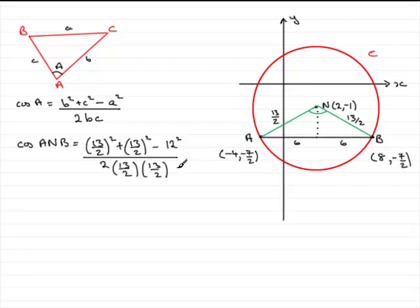If you work that out on your calculator as an exact fraction, it turns out to be -119/169. To get angle ANB, we take the inverse cosine of -119/169. In degrees mode on your calculator, you should get 134.760... degrees.